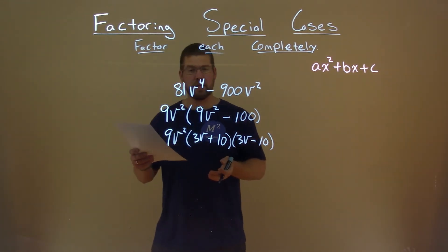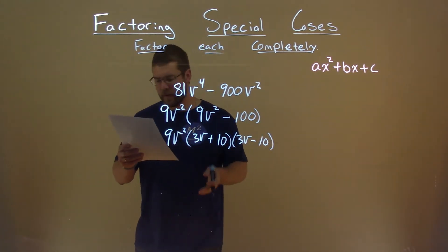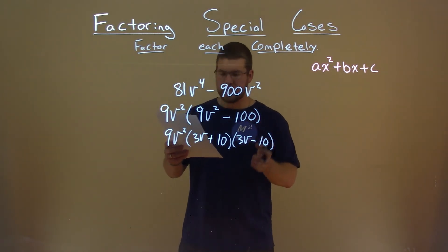So we actually have our final answer here. 9v squared times 3v plus 10 times 3v minus 10.